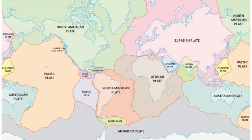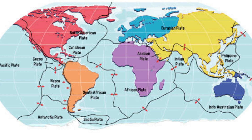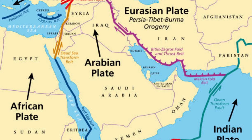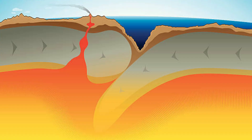Seven major plates have been identified, such as the Pacific and Eurasian plates. A large number of smaller plates have also been discovered, for example the Mediterranean and Near Eastern plates.